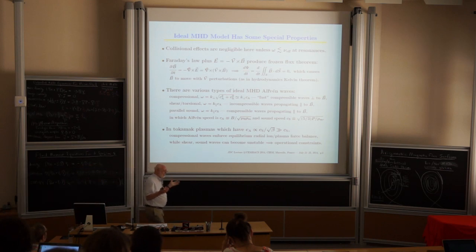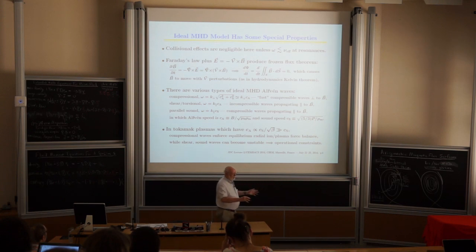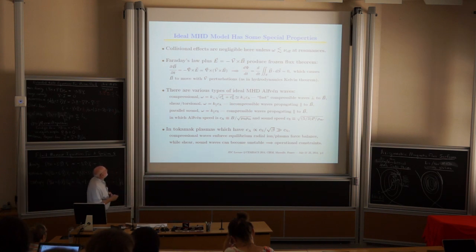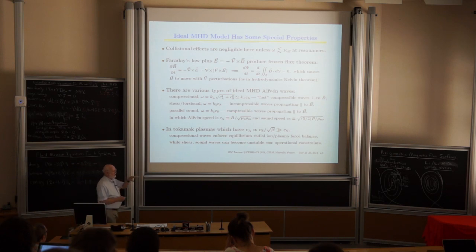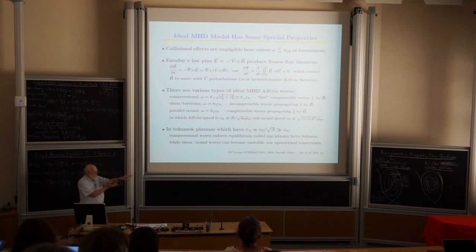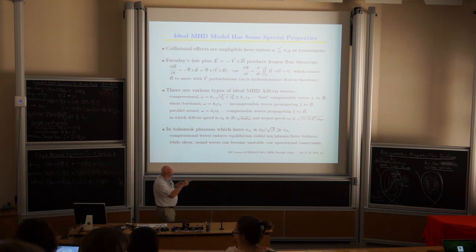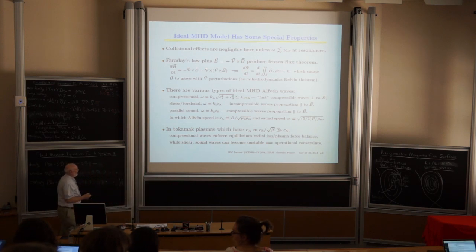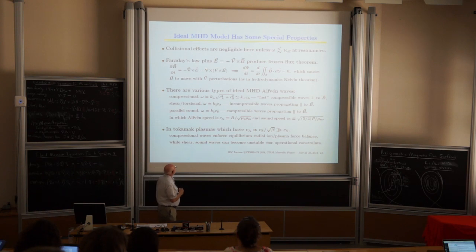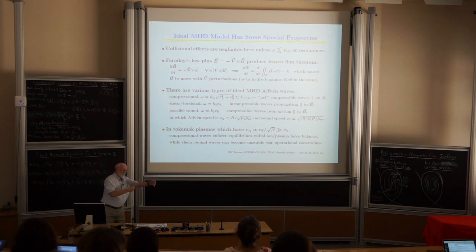In ideal MHD, flow fluctuations cause the magnetic field to follow right with them — field lines don't transport relative to the plasma. Making perturbations, we get several types of MHD waves. The first is the compressional Alfvén wave, sometimes called the fast compressional Alfvén wave, propagating perpendicular to the magnetic field. Then there are shear or torsional Alfvén waves that twist the field, propagating along it — incompressible.